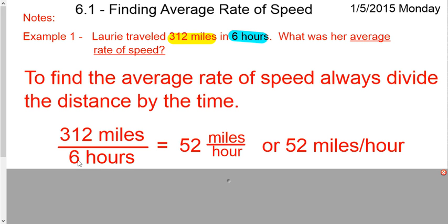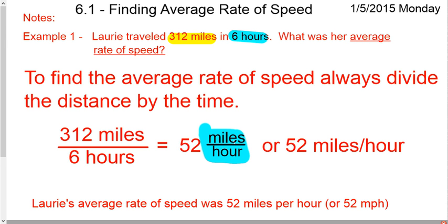So 312 divided by 6 is 52. However, after you divide, you're still left with units, which is miles over hours. We know it more commonly as miles per hour. So miles divided by hours is the same thing as 52 miles per hour.